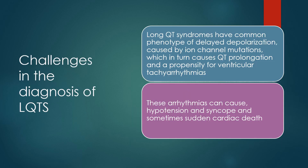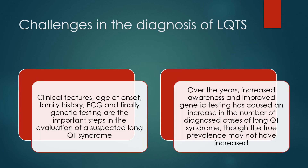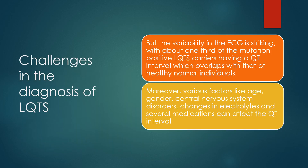Long QT syndromes share a common phenotype of delayed repolarization caused by ion channel mutations, causing QT prolongation and a propensity for ventricular tachyarrhythmias that can cause hypotension, syncope and sudden cardiac death. Clinical features, age at onset, family history, ECG and genetic testing are the important steps in evaluation. Increased awareness and improved genetic testing have increased the number of diagnosed cases. About one third of mutation-positive LQTS carriers have a QT interval overlapping with healthy normal individuals. Various factors including age, CNS disorders, electrolyte changes and several medications can affect the QT interval.